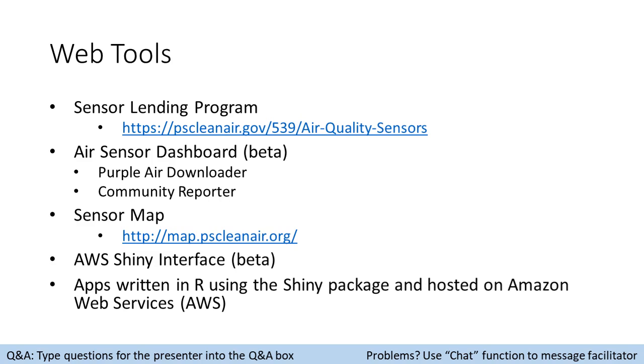The sensor map is kind of standalone, kind of a part of the dashboard, and there's also an internal tool to connect to AWS and help work with these Shiny apps.